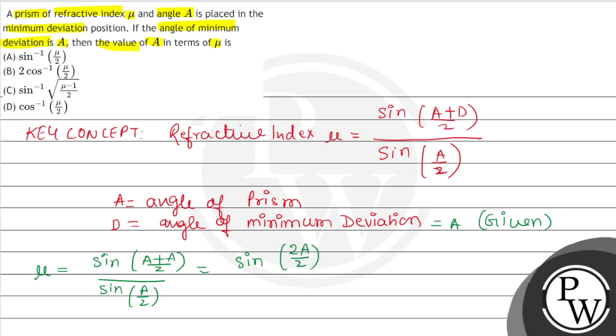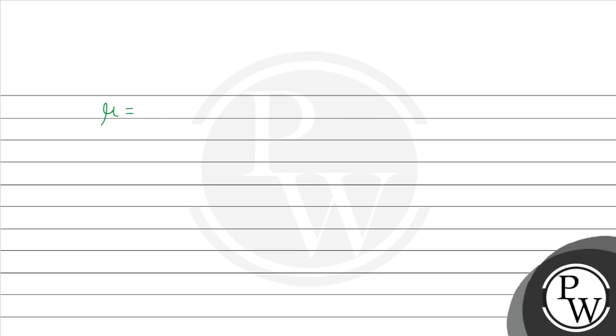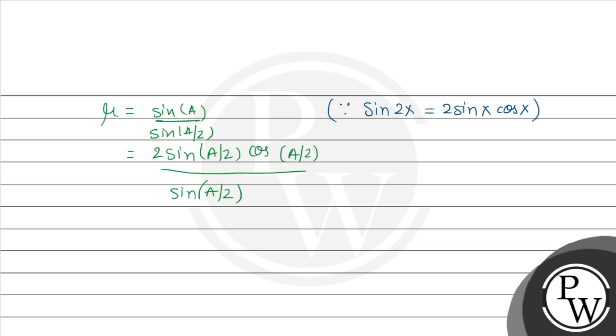Using the identity sin(2x) equals 2 sin(x) cos(x), sin of A equals 2 sin of A by 2 times cos of A by 2.